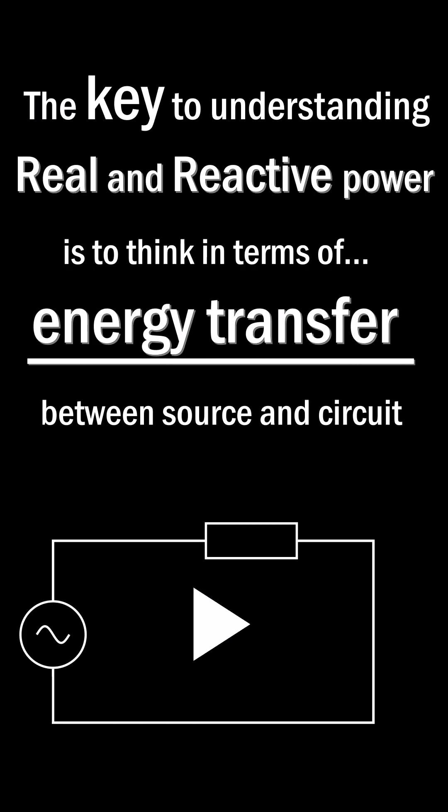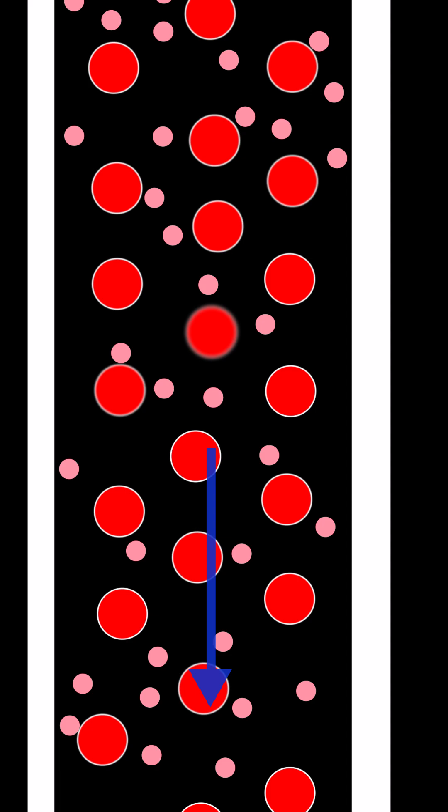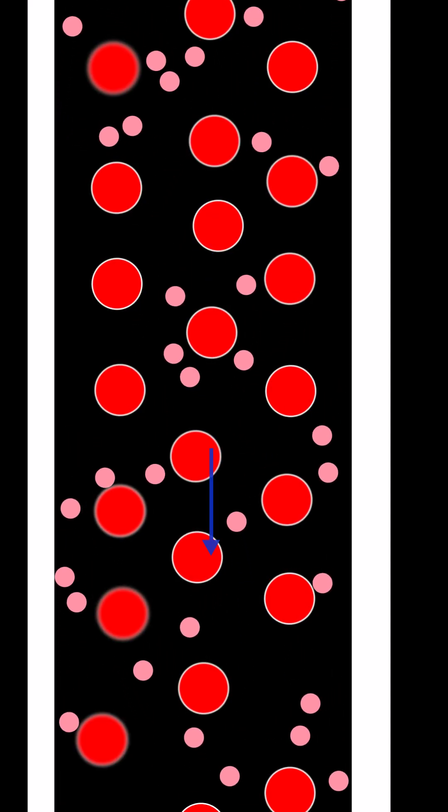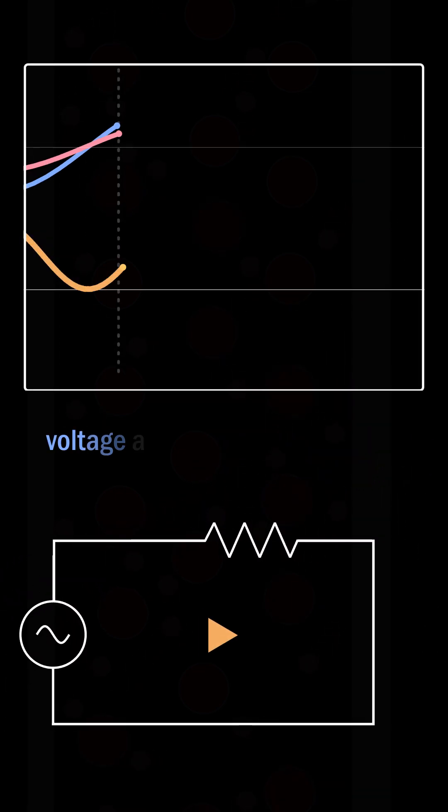The key to understanding real and reactive power is to think in terms of energy transfer. In the case of real power, the voltage source excites the electrons and they collide with the metallic ions in the metal, resulting in energy transfer between source and circuit.